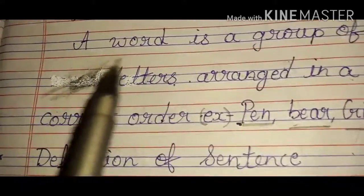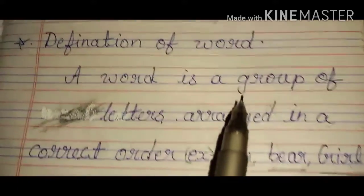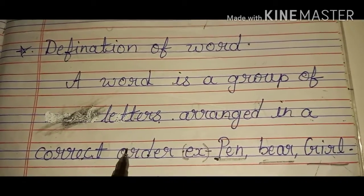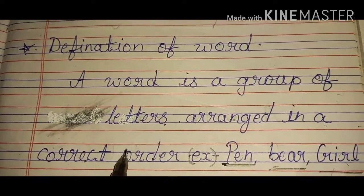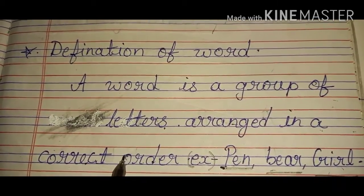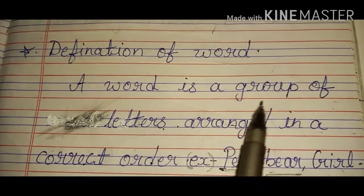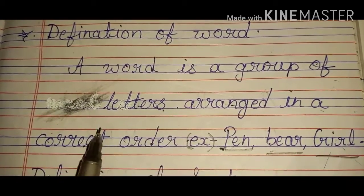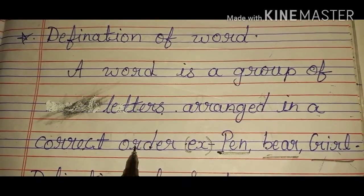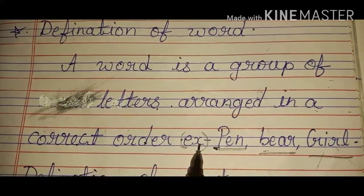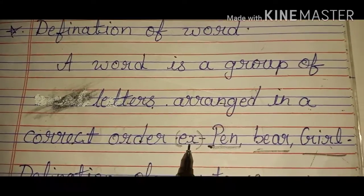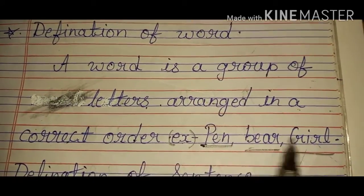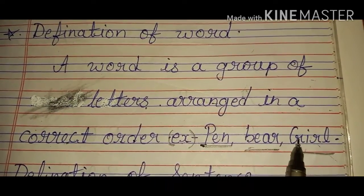As you saw the definition, children, you have to learn this definition — I can ask you in the test: what is a word? A word is a group of letters arranged in a correct order. And you have to write some examples for word, such as pen, bear, and girl.